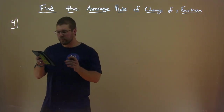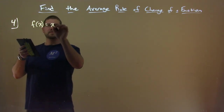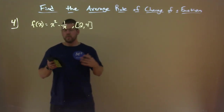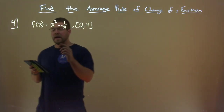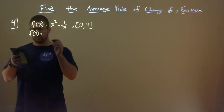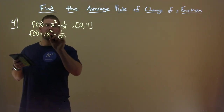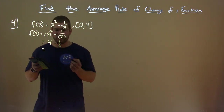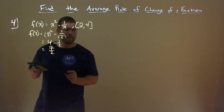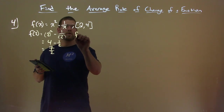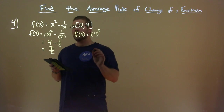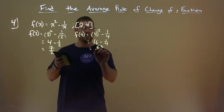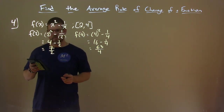We want to find the average rate of change of f(x) = x² − 1/x on the interval from 2 to 4. We need to find f(2) and f(4). f(2) is 2² minus 1/2, which is 4 minus 1/2, equaling 7/2 (or 3.5). f(4) is 4² minus 1/4, which is 16 minus 1/4, equaling 63/4. Now we find the average rate of change.